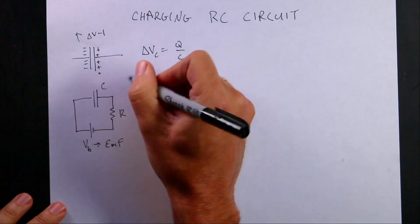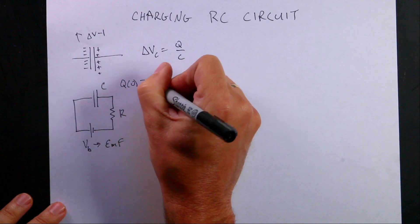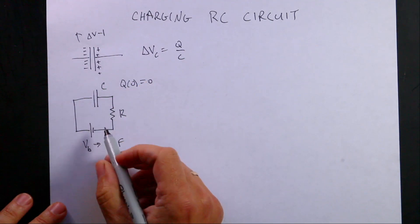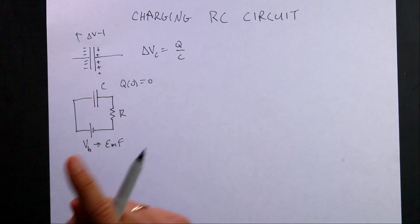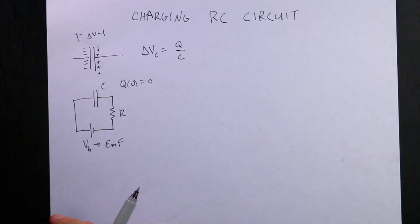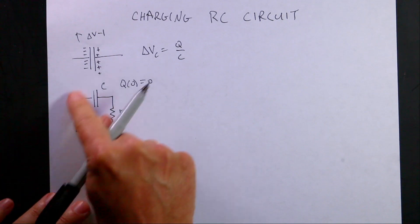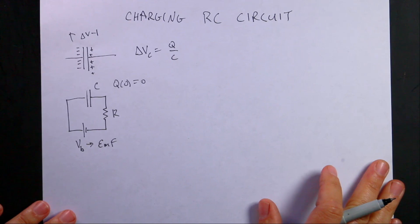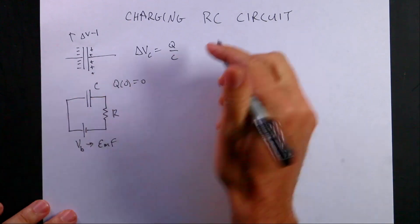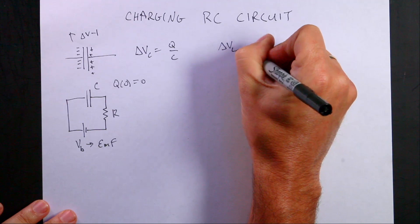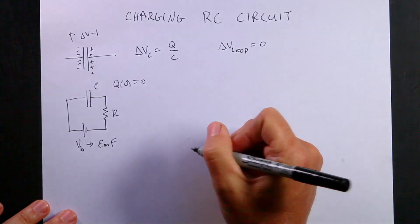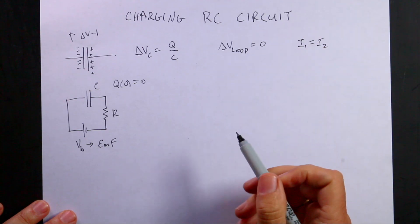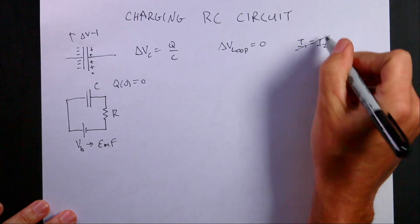So if Q at time T equals zero equals zero — there's no charge on the capacitor — what's going to happen? Let me step back and write the loop rule for this equation. There are two things in circuits we can deal with: one is the loop rule, which says that delta V around any loop equals zero; and the other is the junction rule, which says the current into a node equals the current out. But the junction rule is not really useful here.